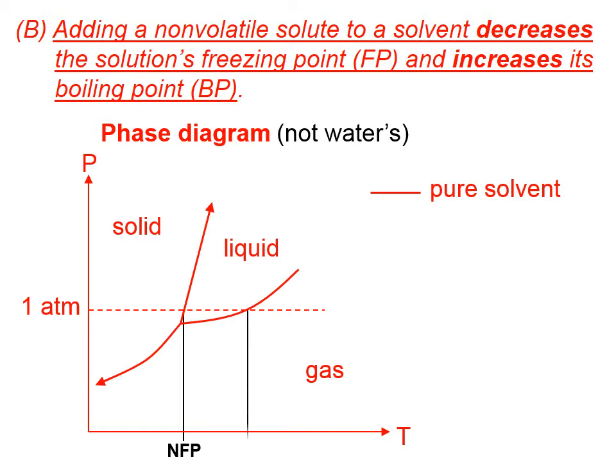Similarly, between the liquid and gas phases at one atmosphere of pressure, we have the normal boiling point. 'Normal' refers to a confining pressure of one atmosphere.